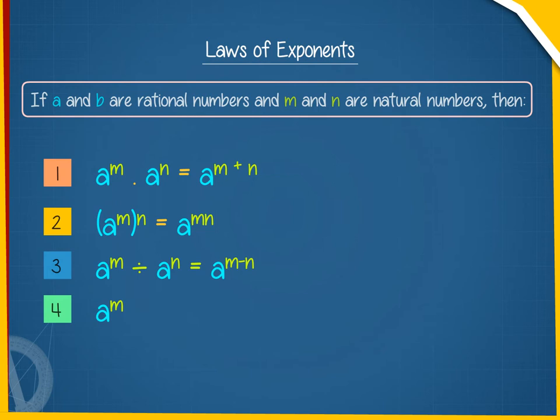Law 4: A raised to the power M multiplied by B raised to the power M equals AB raised to the power M.